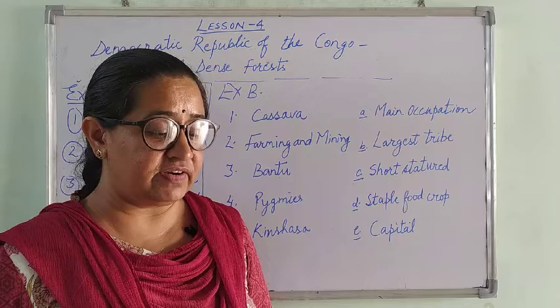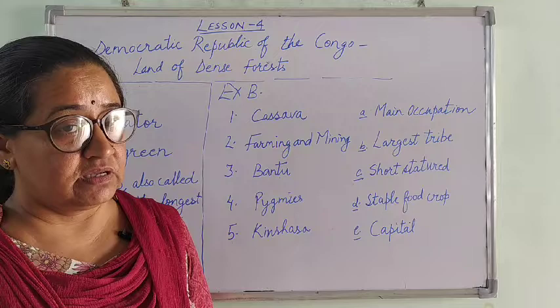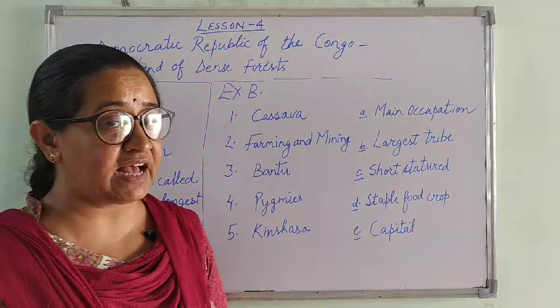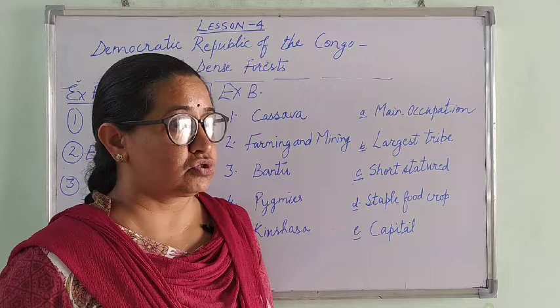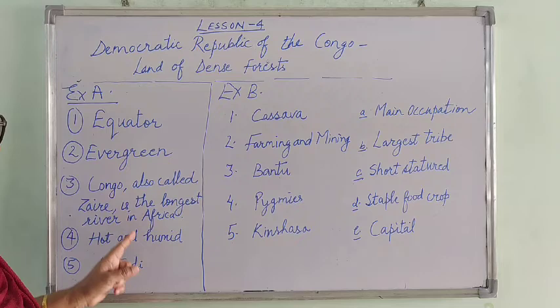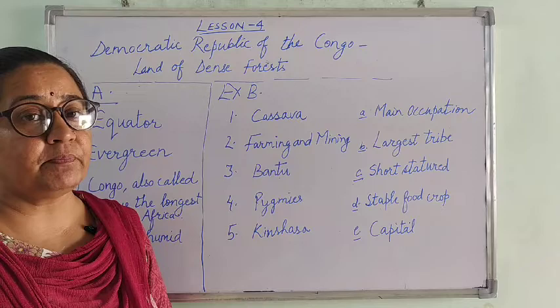Question 1: Which important line of latitude passes through Democratic Republic of Congo? We just revised this — the equator passes through this country and it is near the equator. So our right answer is equator. Students, tick mark Option A — Equator. I have written the correct answers on the board. The first correct answer is Equator, Option A.